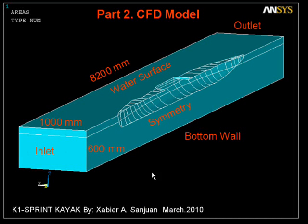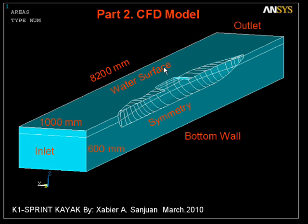This is Part 2 of the computational fluid dynamics model I started explaining in the first part. I'm showing here the fluid domain or grid — the dimensions are 8,200 millimeters in length, one meter in width, and 600 millimeters in height.